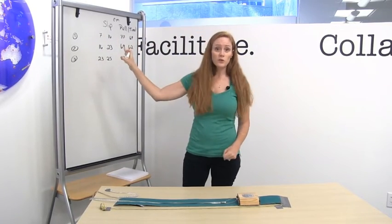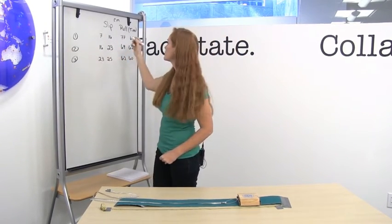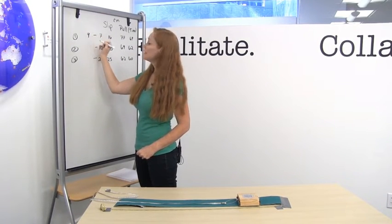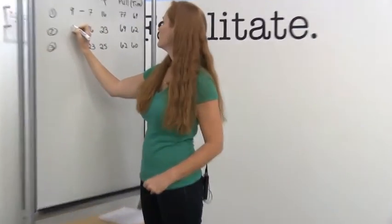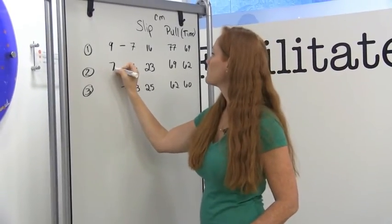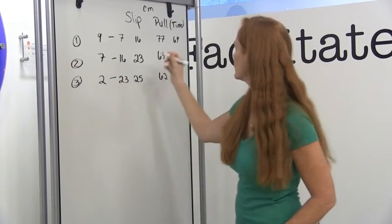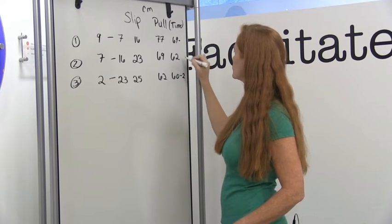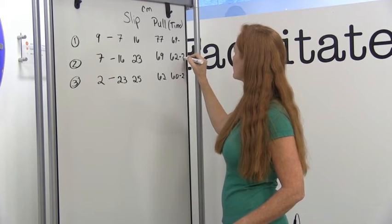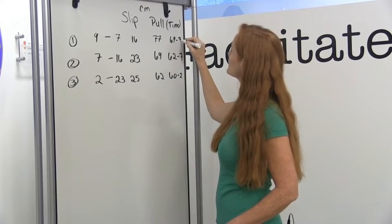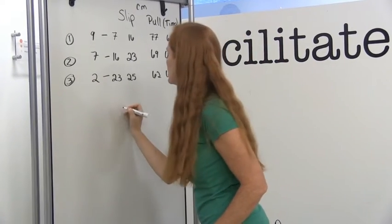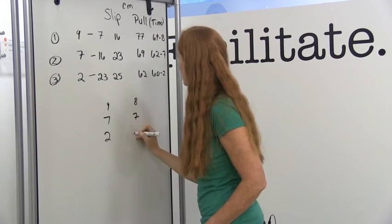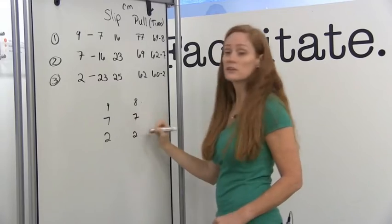Of course, these raw values aren't what you want — you want to know the difference between them. So in this case, for the slip: 9 centimeters, 7, and 2. And for the pull — the amount of time — this is 8, 7, and 2. So what we have in the end: our slip values are 9, 7, 2, and the amount of time that passed would be 8 years, 7 years, and 2 years.